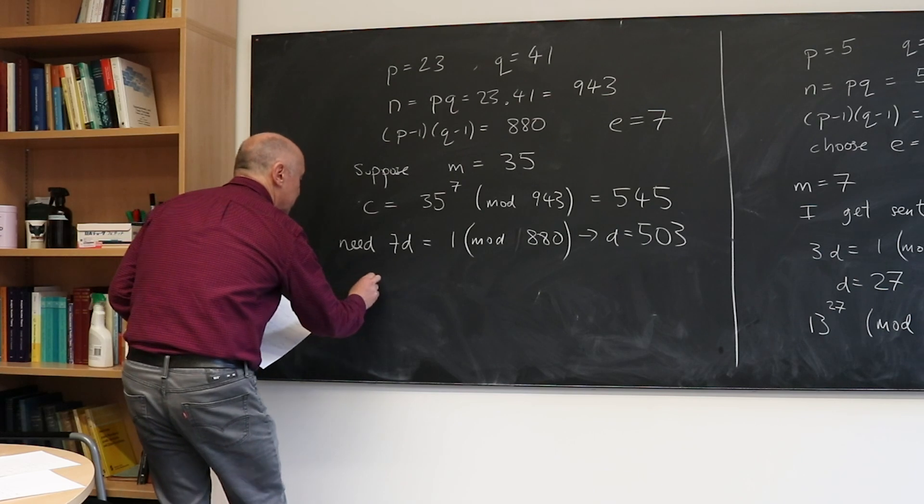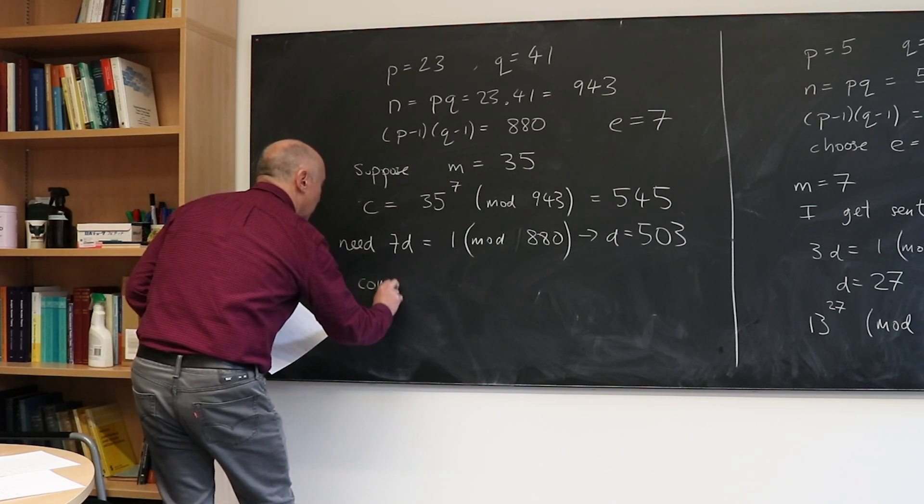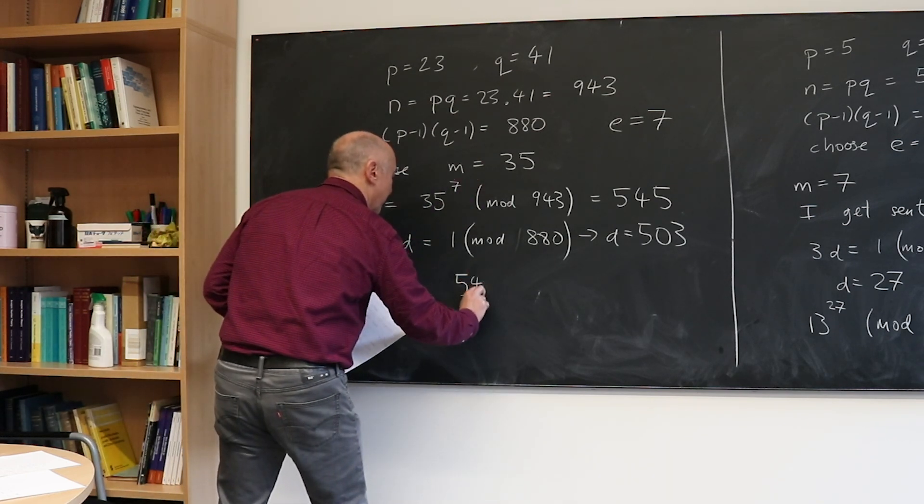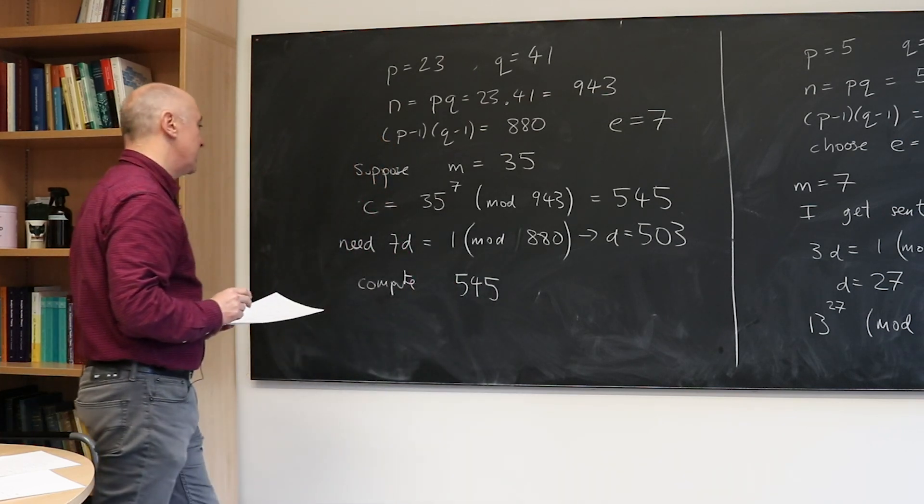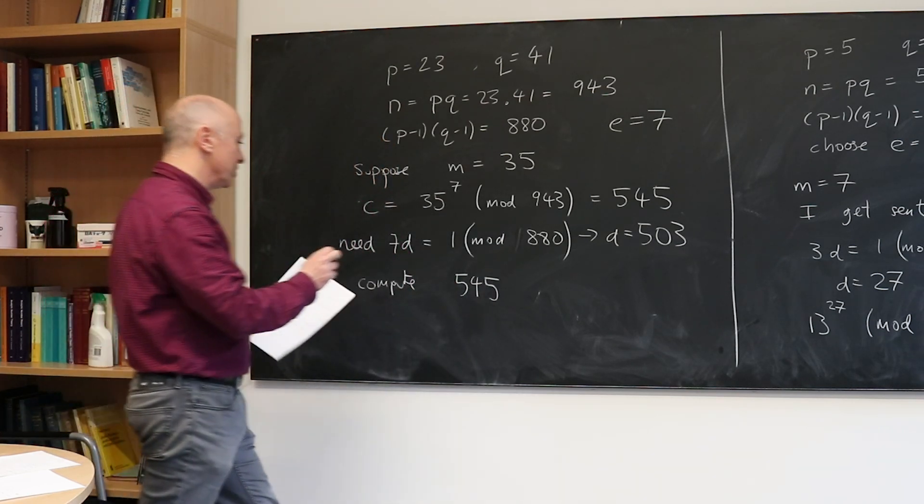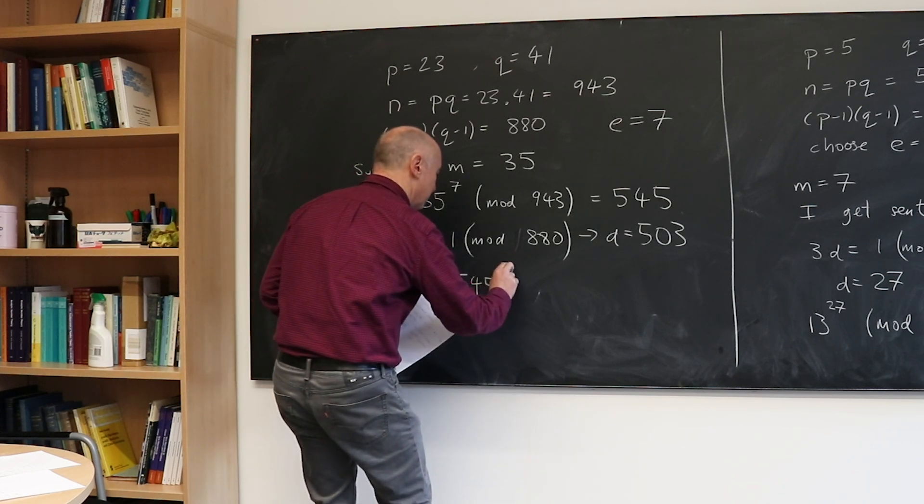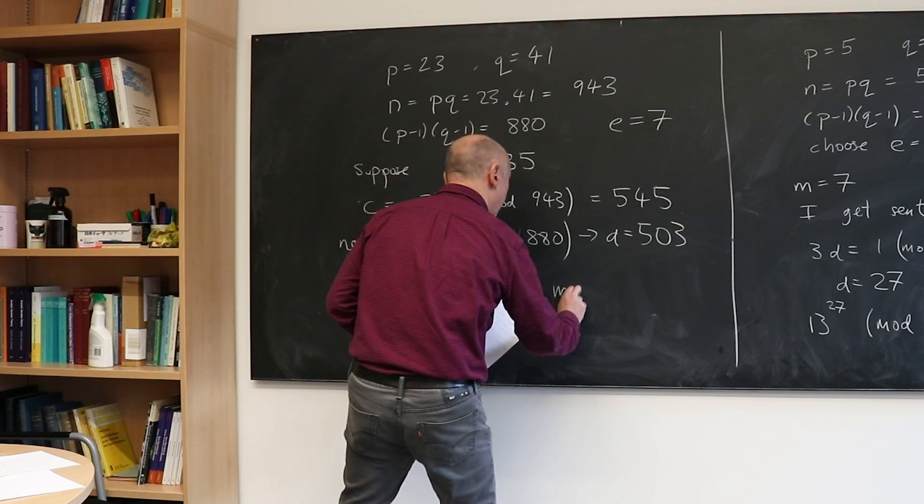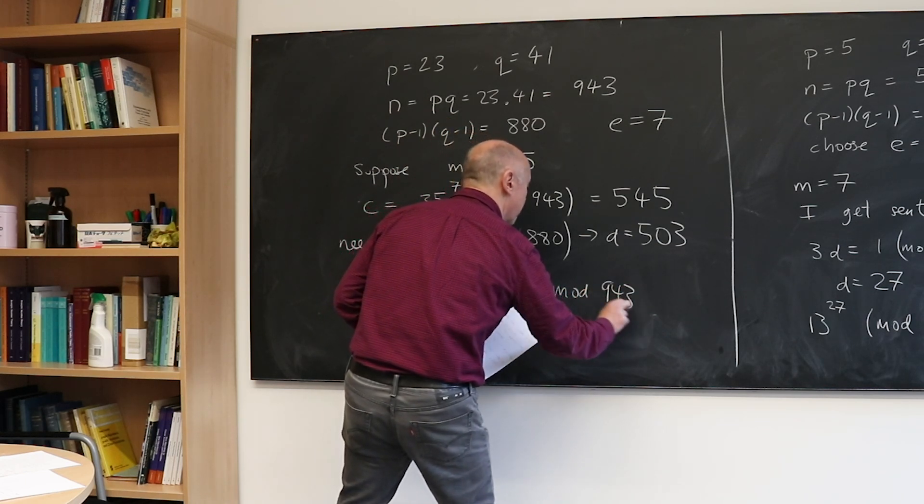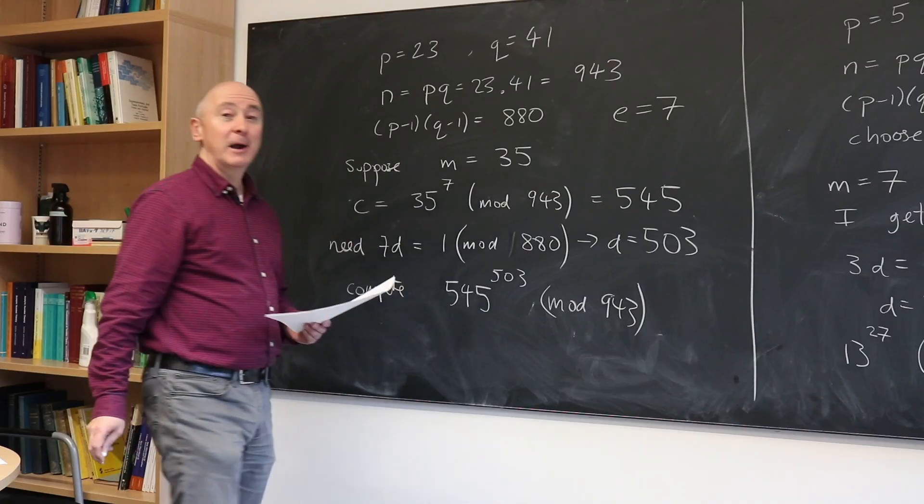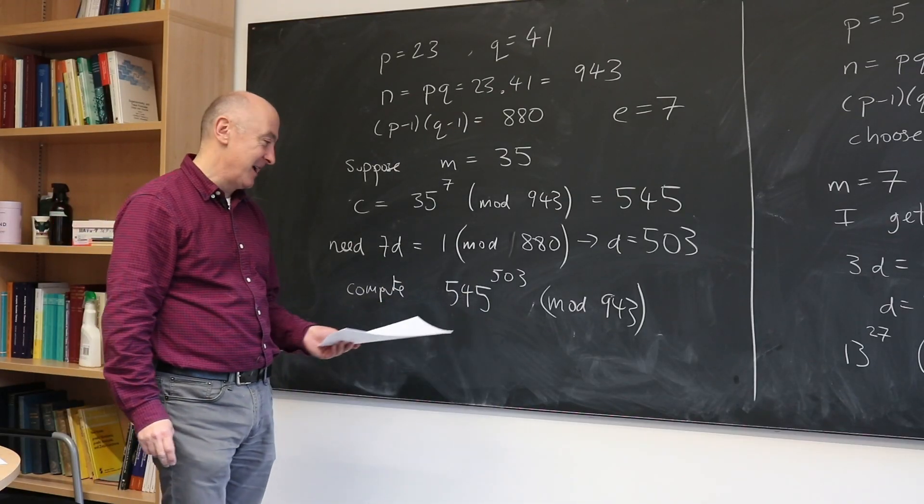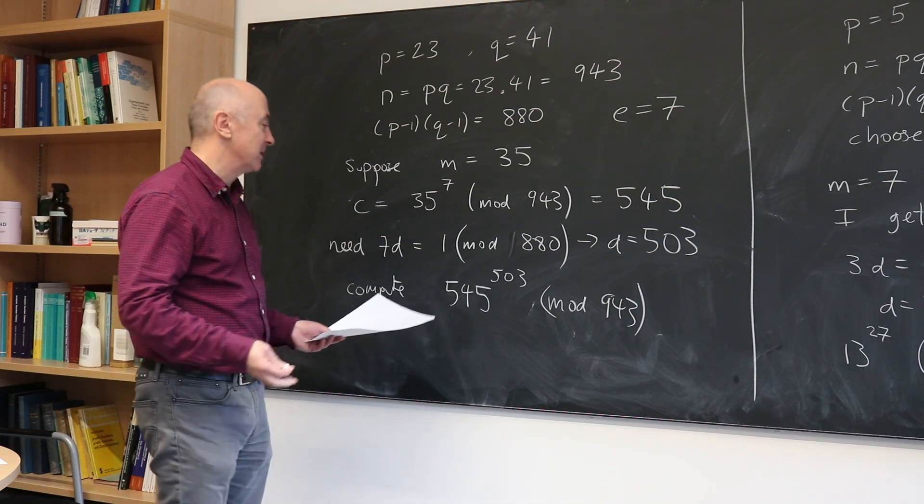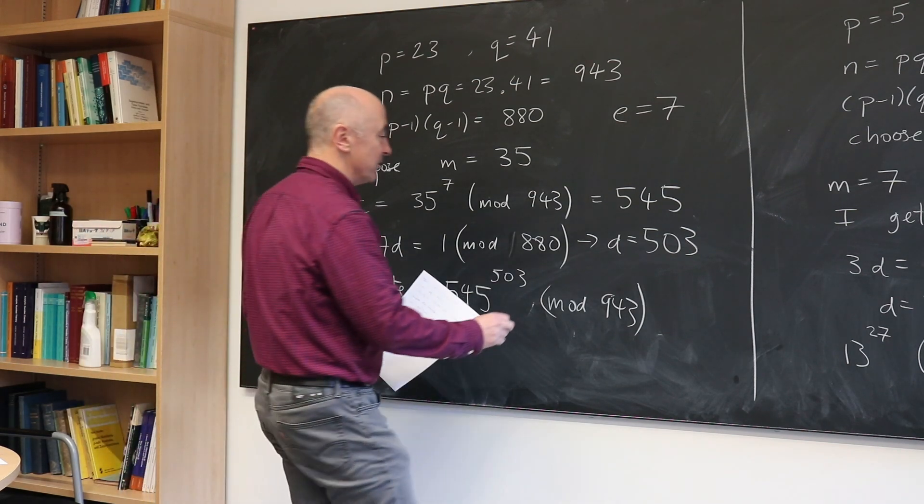So now what we do is compute the message I'm sent, 545, and we're going to raise that to the power D, which is 503, and we're going to do this modulo 943. And the claim is that if you do this sum, and there are tricks to do it, I won't do it for you, you can put this on a big enough computer.